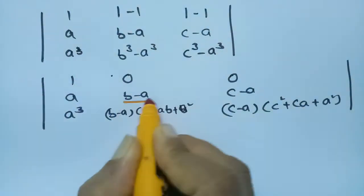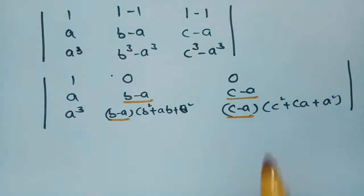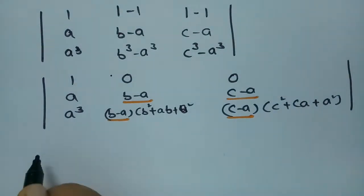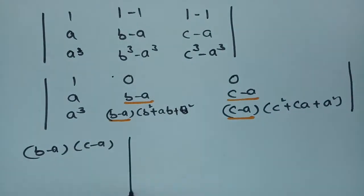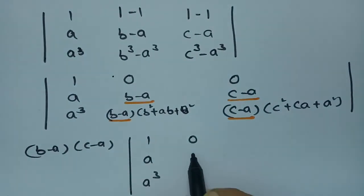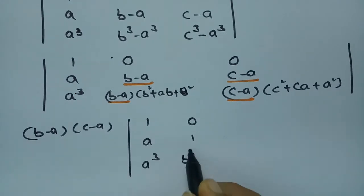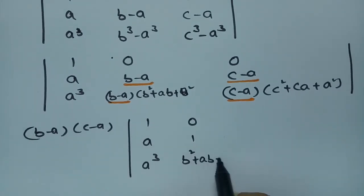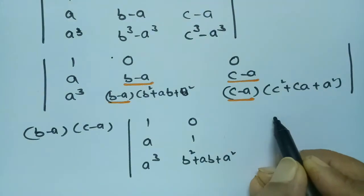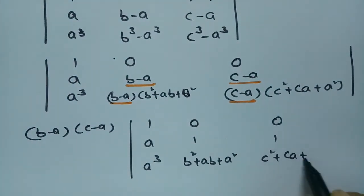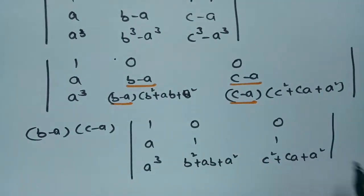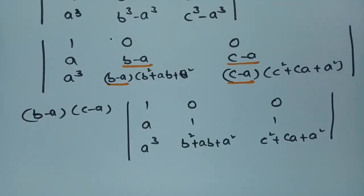Taking (b−a) common from column 2 and (c−a) common from column 3, the determinant becomes (b−a)(c−a) times: 1, a, a³ / 0, 1, b²+ab+a² / 0, 1, c²+ac+a².